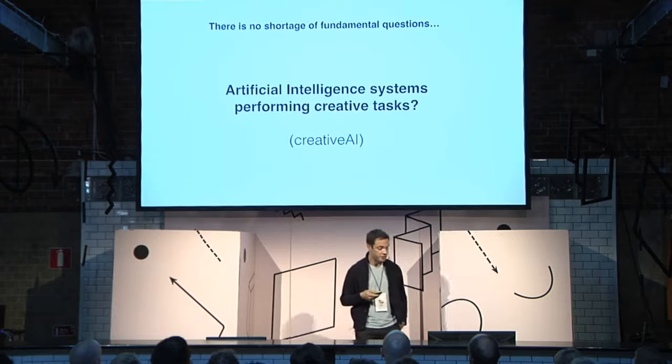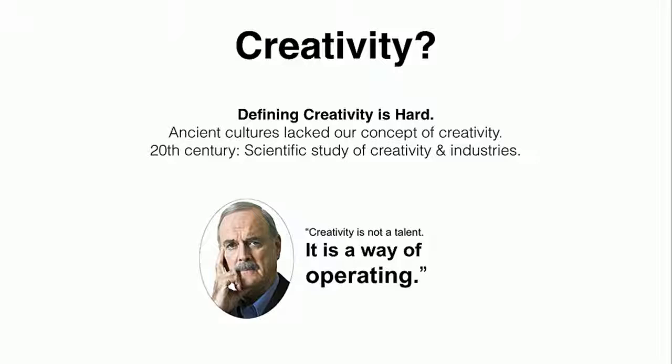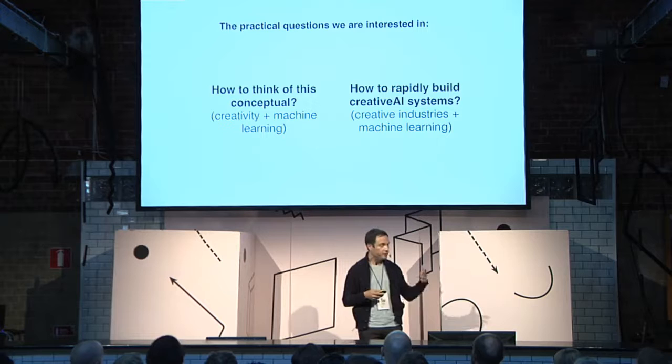There's a real explosion, and no shortage of fundamental questions this type of work raises. One is: what are we talking about when AI systems perform creative tasks? The second one I always get asked is: is this creativity? I'm going to refer to a specific subsection of creativity, which goes back to how John Cleese of Monty Python defines it — creativity is not a talent, it's a way of operating. Further questions I'm personally more interested in: how do we think about this conceptually, and how do we rapidly start to build systems with this in production?